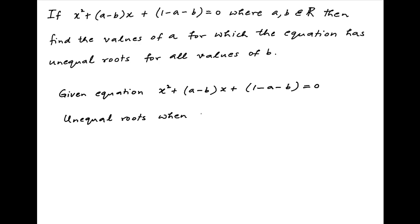The roots will be unequal and real when the discriminant is strictly greater than 0. The discriminant is equal to (a-b)² - 4(1-a-b), and this should be greater than 0.